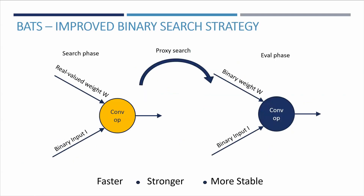Since binary networks are harder to train, we propose to perform the search using a network in which the weights are kept real and the input is binarized. This correlates well with the final performance when we train a fully binary network, and is more stable and faster to train.